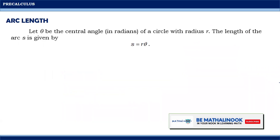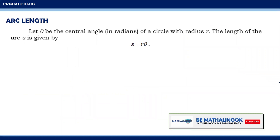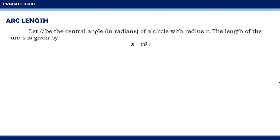Let us define first what is an arc length. Let theta be the central angle in radian measure of a circle with radius r. The length of the arc, represented by s, is given by the formula s equals the product of the radius and the measurement of theta.